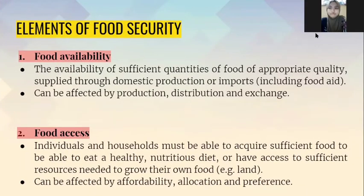There are four elements in food security. The first one is food availability — the availability of sufficient quantities of food of appropriate quality, supplied through domestic production or imports. It can also be affected by production, distribution, and exchange.